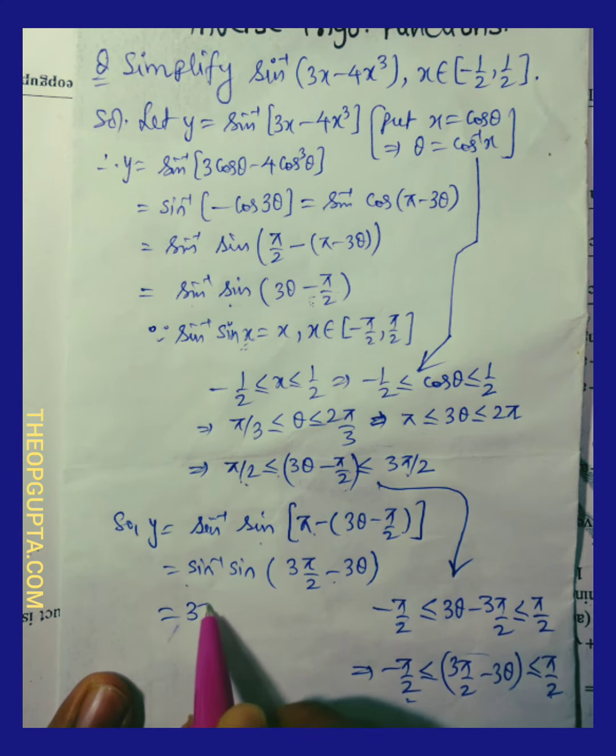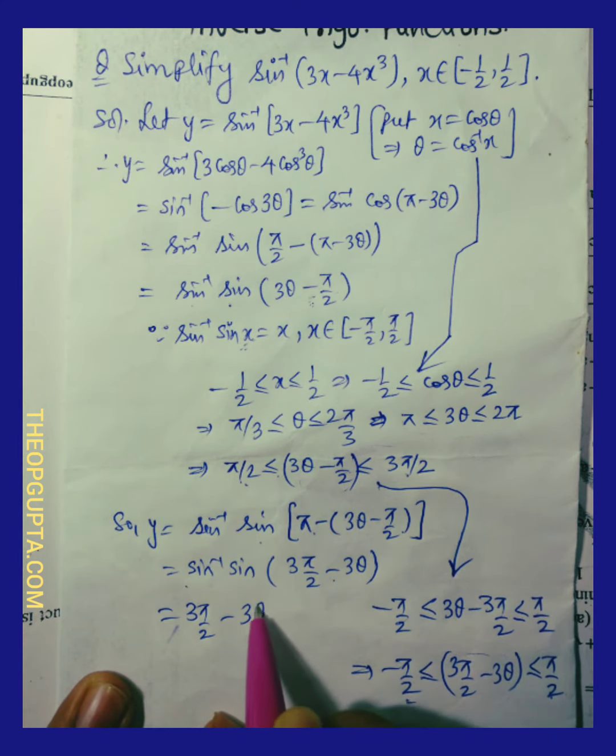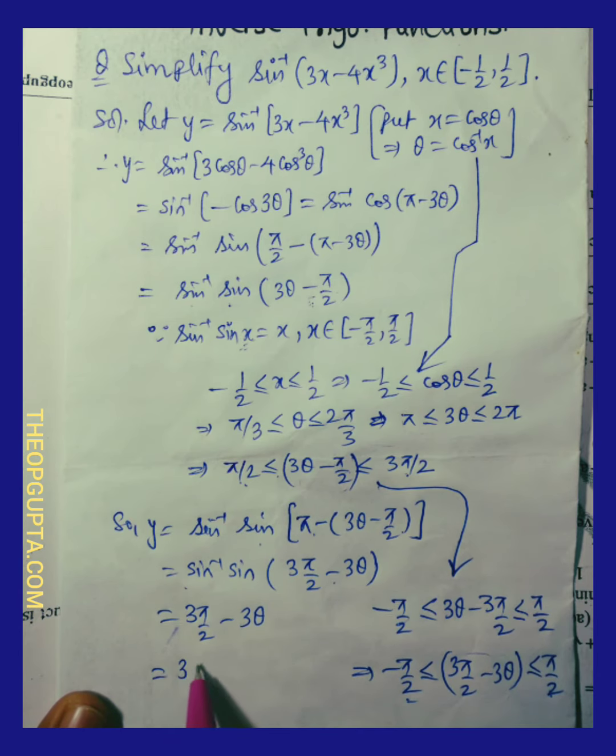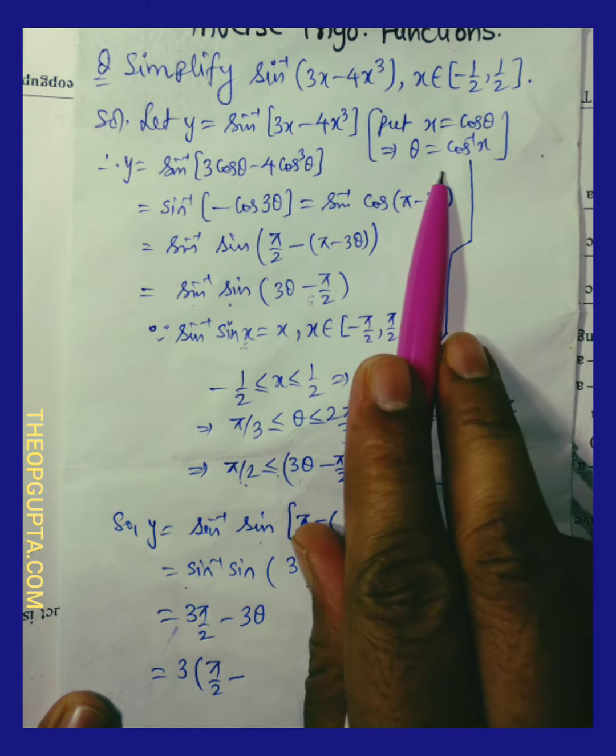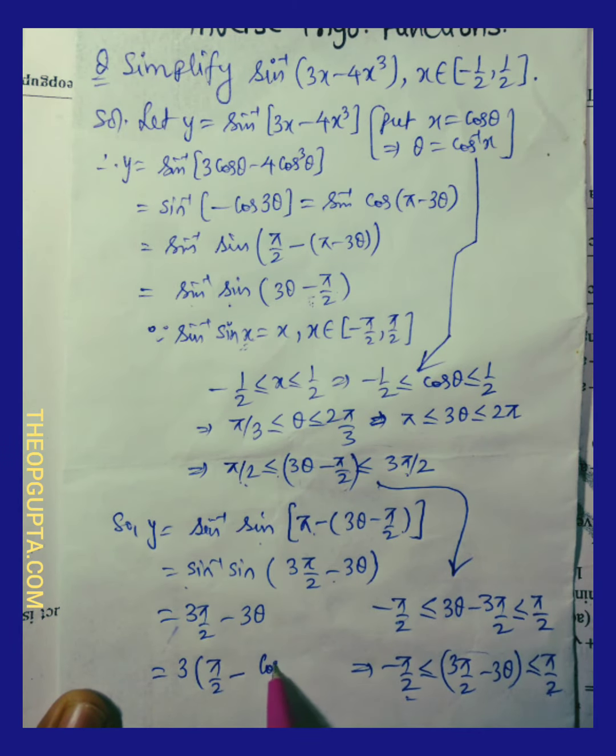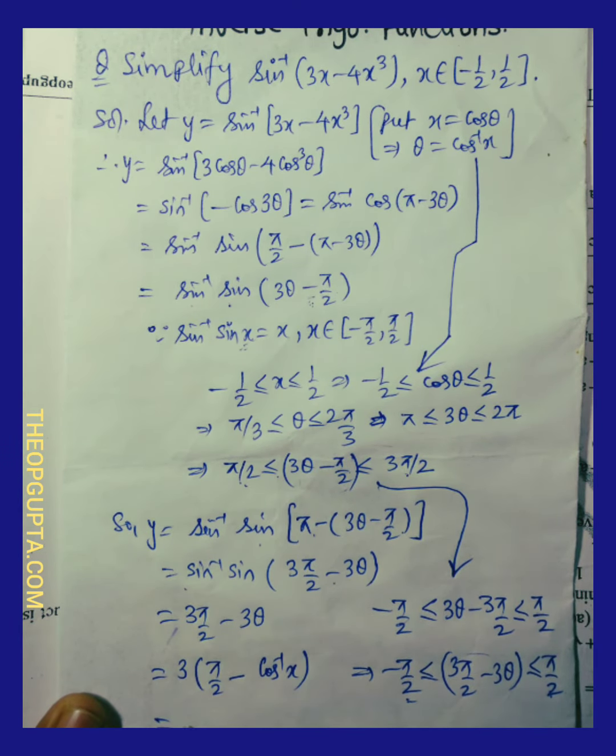So now if I take 3 common, we have pi by 2 minus theta, where theta is cos inverse of x. So it is pi by 2 minus cos inverse of x. And this is sine inverse of x. So that is the answer.